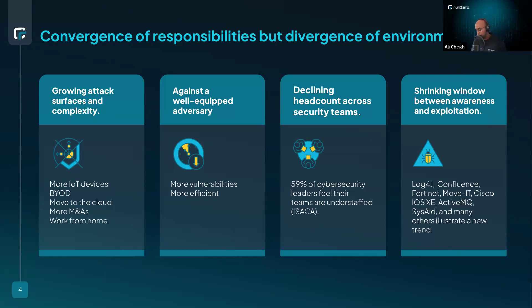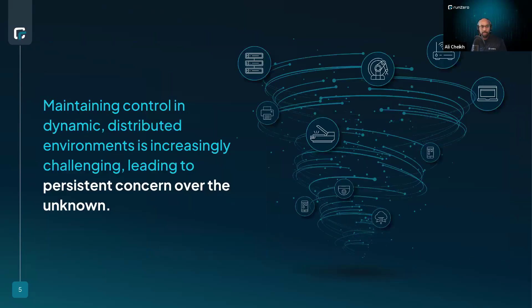This has amplified the imbalance between security teams and attackers. On the flip side, declining headcount and reduced budgets make it even harder to manage the attack surface. This has led to two main challenges: unknown assets, and unknown subnets that hold those unknown assets — and an increasing number of devices giving attackers more and more entry points.